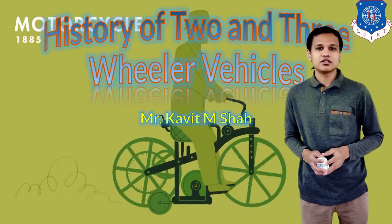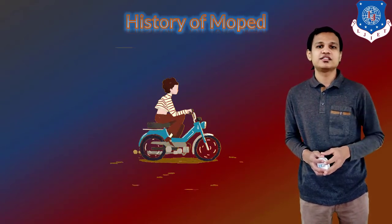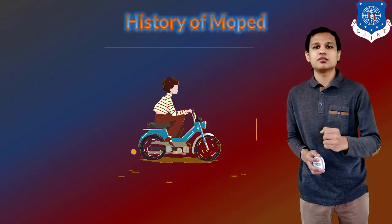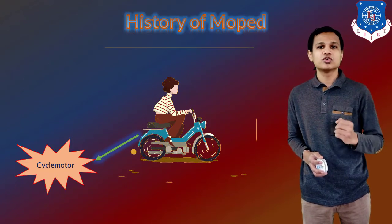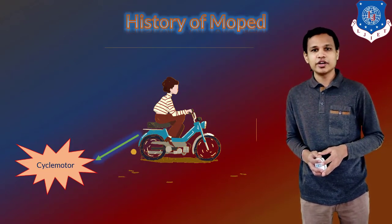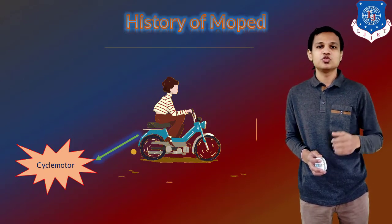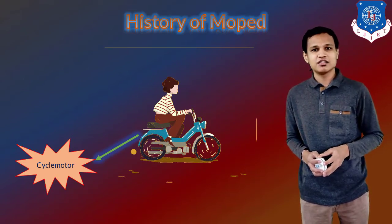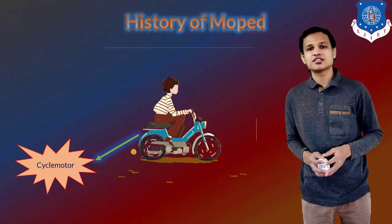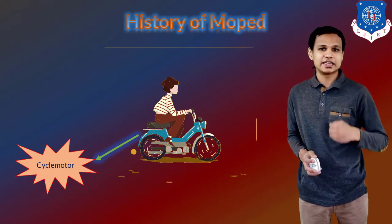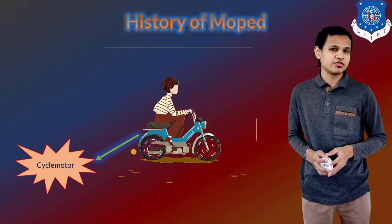Let's start with the first vehicle, that is the moped. The first thing is the history of the moped and how the moped came into the picture. When the moped was first manufactured, it was known as the cycle motor. The cycle motor was working on a running condition, which means you had to run the vehicle to start it. The pedal was not provided in that version of the moped.